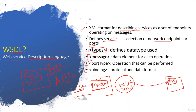Under the 'types' tag you can see if simple type, complex type, or primitive types have been used - everything is listed there. The 'message' tag describes what kind of operations you're performing and what data elements - like request and response - you want to transmit. Under 'port type', you can see what operations can be performed on the service. And 'binding' tells you what protocol and data format will be used.